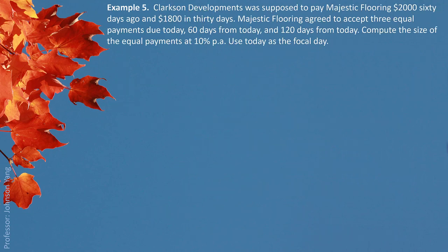Example 5. Collection Developments was supposed to pay Majestic Florn $2,000 sixty days ago and $1,800 in 30 days. Majestic Florn agreed to accept three equal payments due today, 60 days from today, and 120 days from today. Calculate the equal size payment at a 10% interest rate, using today as the focal date. We should clearly understand the structure: the original debt consists of $2,000 from 60 days ago and $1,800 due 30 days from now, and these are to be replaced by three equal payments.